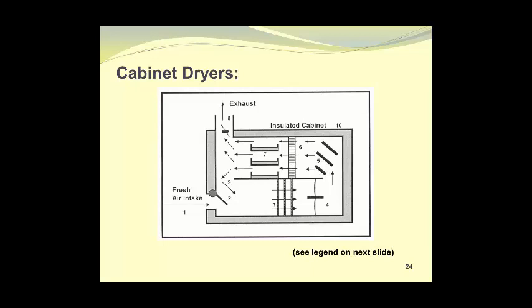At point number 6 we have air distribution plates which act to even out the flow of the air as it passes over the trays of wet material at location number 7. The air is now moist and can be exhausted. However, there may be enough heat and drying capacity left so that some of the air can be recirculated for energy efficiency. The arrangement then is to recirculate some of the air at point number 9 and to add makeup air through the fresh air intake, balanced with the exhaust valve at point number 8 where the exhaust is vented to the atmosphere.